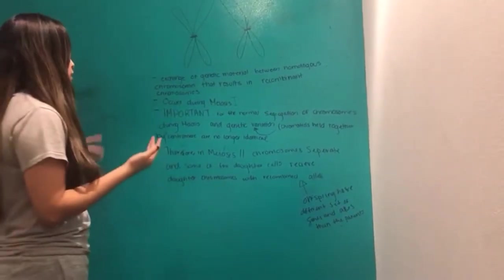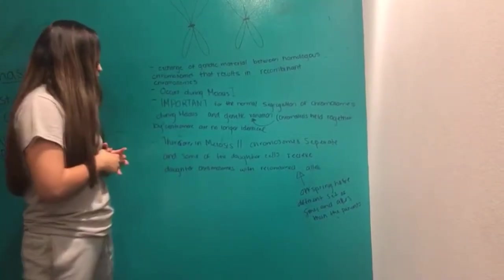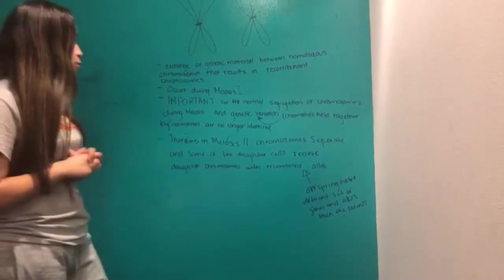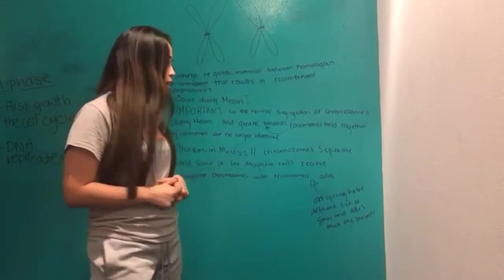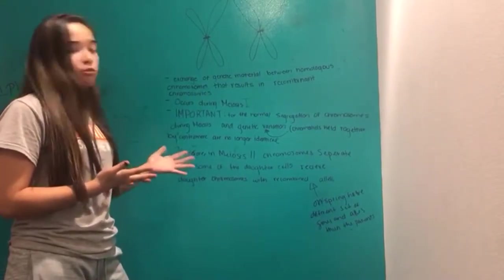This is because chromatids held together by centromeres are no longer identical. Therefore, when meiosis II chromosomes separate, some of the daughter cells receive daughter chromosomes with recombinant cells. This is why offspring have different sets of genes and alleles than parents.